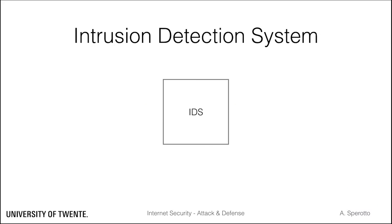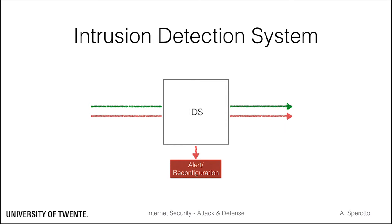An intrusion detection system has two main tasks: inspecting traffic and taking action when malicious traffic is identified. Typically, this means raising an alert, although other actions are also possible.